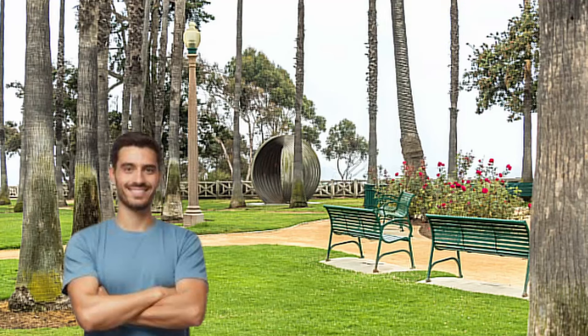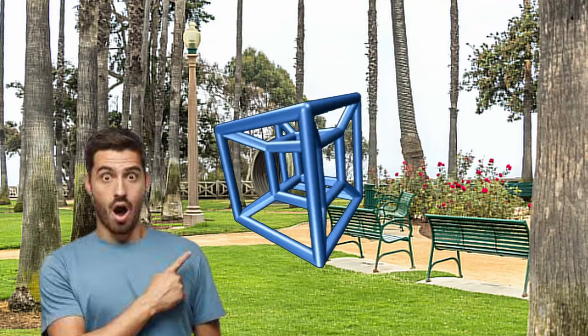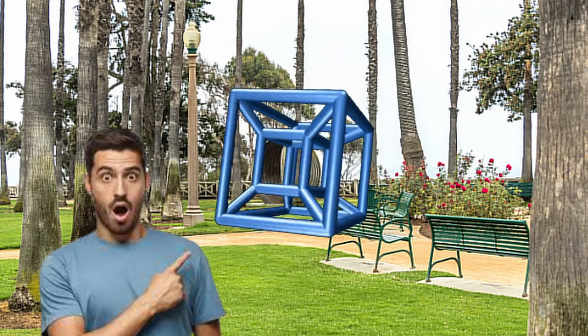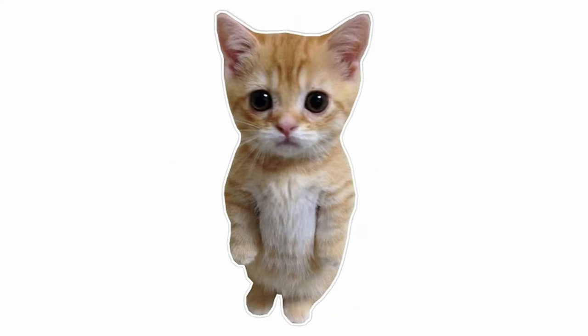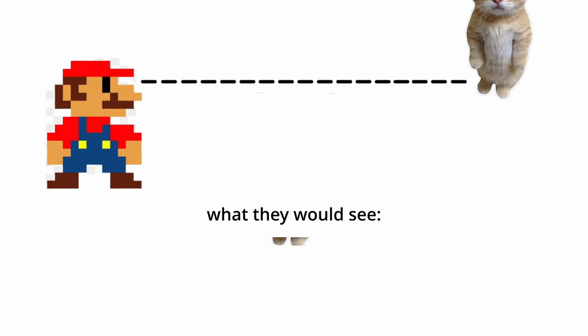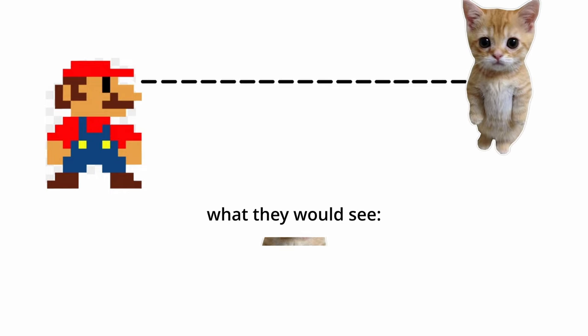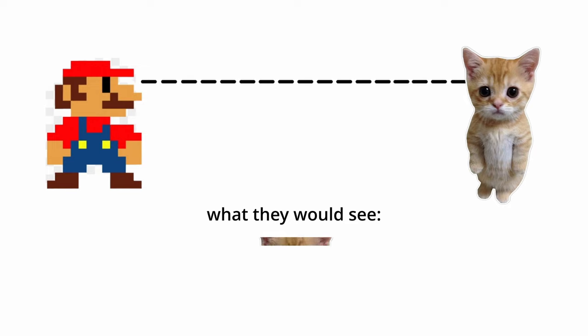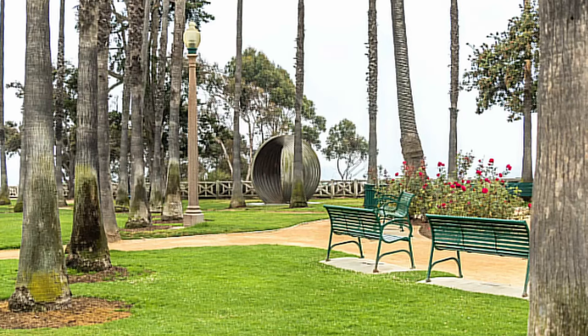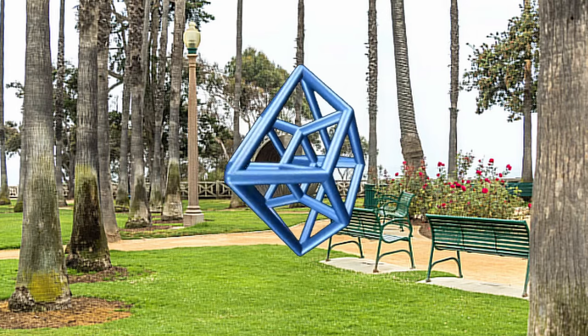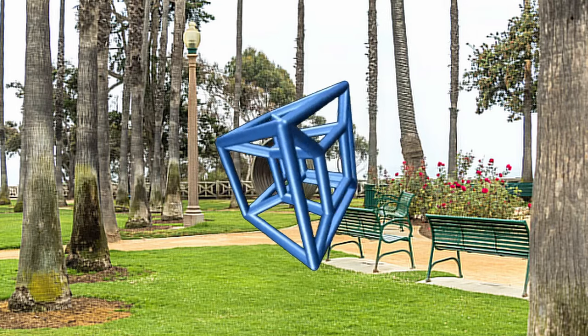If a four-dimensional object were to still only appear in our world, it would look like it's shape-shifting. This could most easily be understood by looking at this two-dimensional analogy. Beings in a two-dimensional plane can only see in a single line. So if we were to move a three-dimensional object through their 2D plane, they would just see a weird object whose shape is constantly changing. So hypothetically, if a 4D object were to appear in our world, it would also look as if its shape is constantly changing.